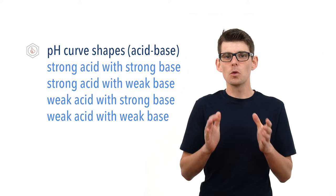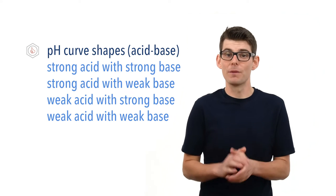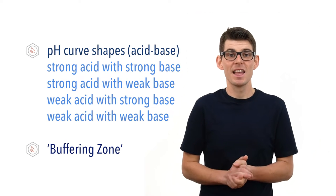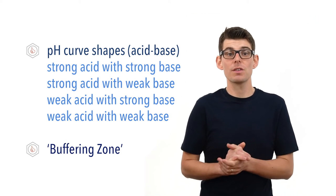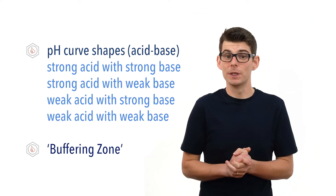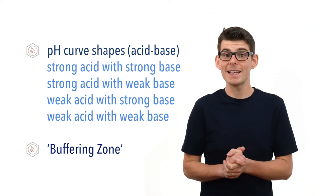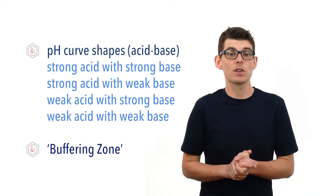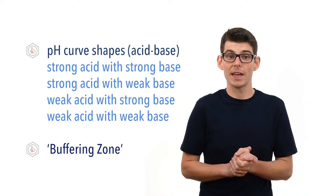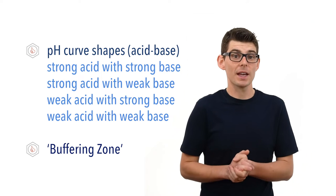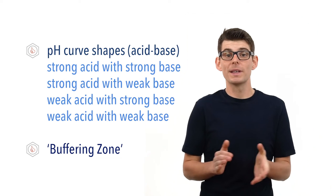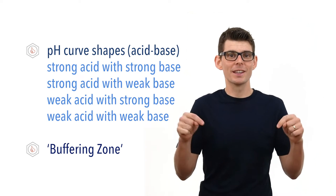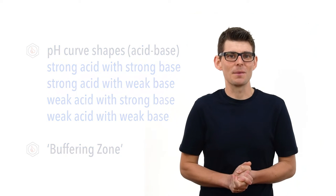We will also talk about the buffering zone in a pH curve. Titrations, the difference between equivalents and endpoints, and using pH curves to find the Ka of a weak acid have all been outlined in separate videos. Check the links in the description below.